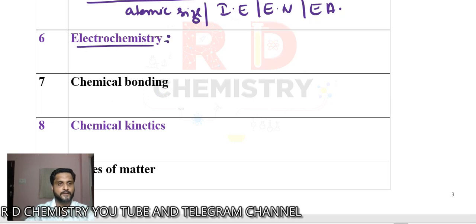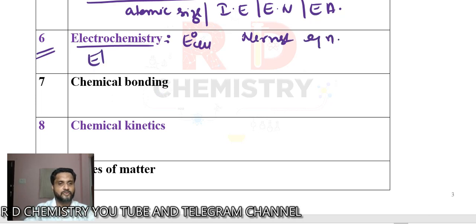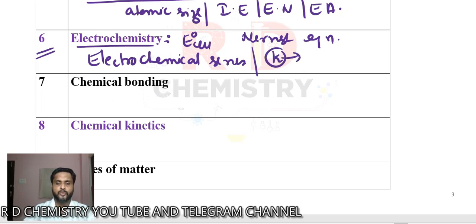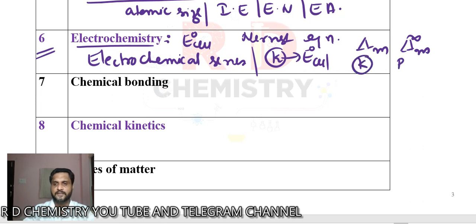On day 6, electrochemistry. You can read the entire chapter, but the key highlights are: how to find E°cell, and you must remember the Nernst equation. Also learn the electrochemical series. Then how to calculate the equilibrium constant K when given E°cell. Learn how to find molar conductivity, including at infinite dilution. How to calculate conductivity using resistance, and remember the cell constant G* = K.